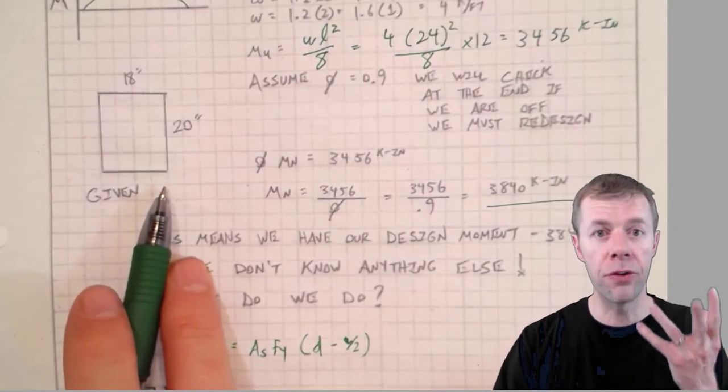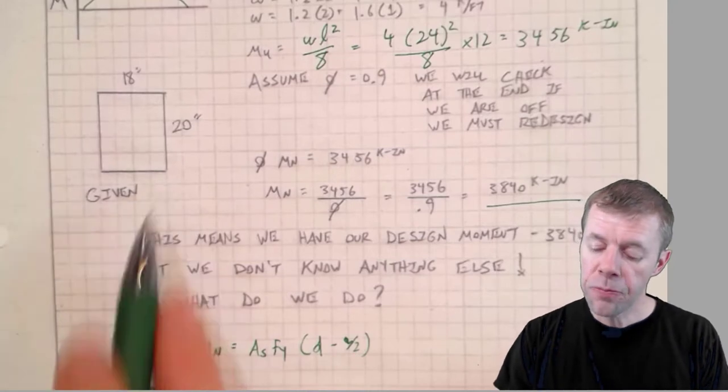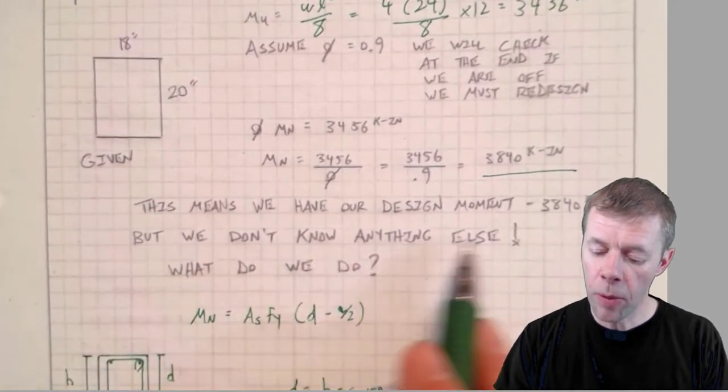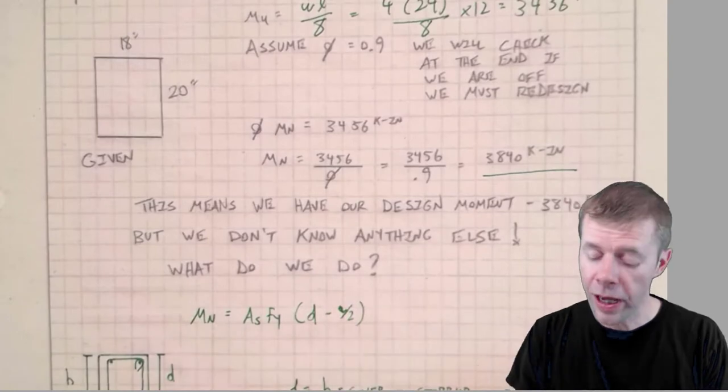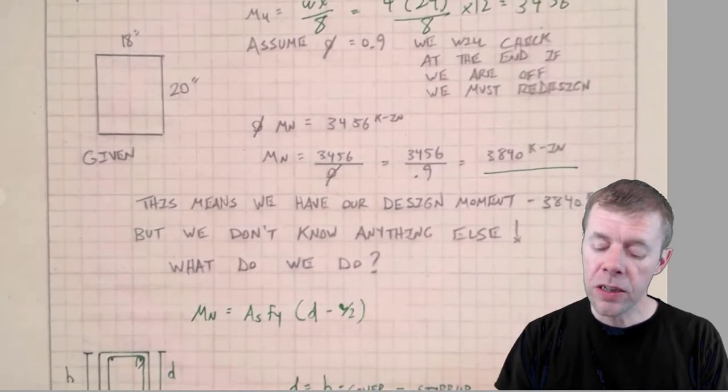Now I've been given my cross-section: 20 inches by 18 inches. It's given to me, I didn't have to figure it out. This means we have our design moment but we don't know anything else.